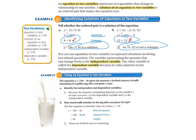Example 2: Using an equation in two variables. The equation y equals 128 minus 8x gives the amount y in fluid ounces of milk remaining in a gallon jug after you pour x cups. Letter A says identify the independent and dependent variables. Because the amount y remaining depends on the number of x cups you pour, y is the dependent variable and x is the independent variable.